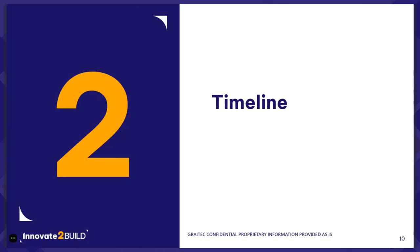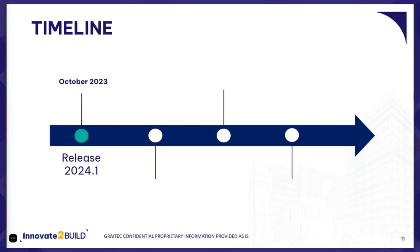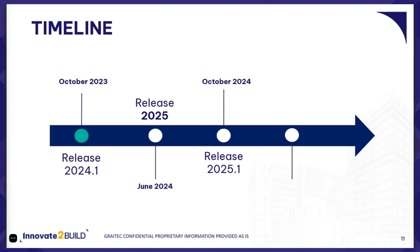Shortly about the timeline: the previous 24.1 release, the last one, was released in October. The next one — the 2025 release — is planned for June this year. Next, in October this year, we plan to release the 25.1 update. And the 2026 release is planned for next year, also in May or June. That's the clean timeline for releases.